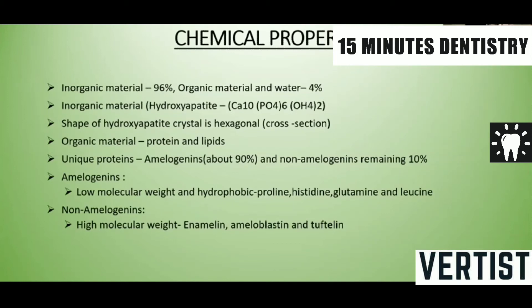The unique proteins found in enamel are amelogenins, which make up the major portion at 90%, and non-amelogenins at 10%. Amelogenins are rich in proline, histidine, glutamine, and leucine, and they have low molecular weight. Non-amelogenins are rich in ameloblastin and tuftelin, and they have high molecular weight.